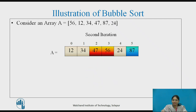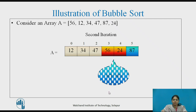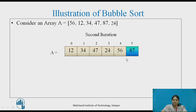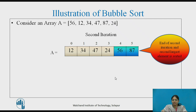The next comparison is done between A[3] and A[4]. A[3] is greater than A[4], so swapping is needed. After swapping, 56 is moved to this position. This is the end of the second iteration, and we can see that the second largest element is now sorted.